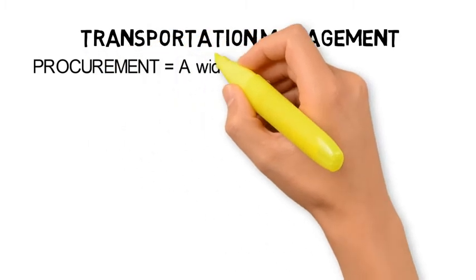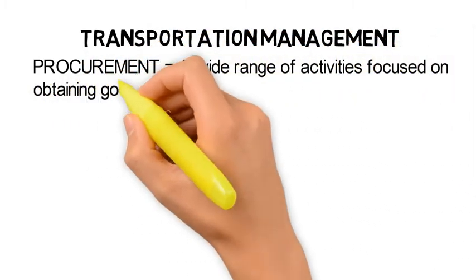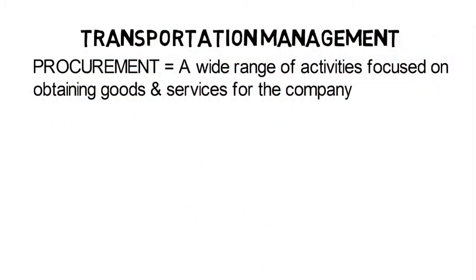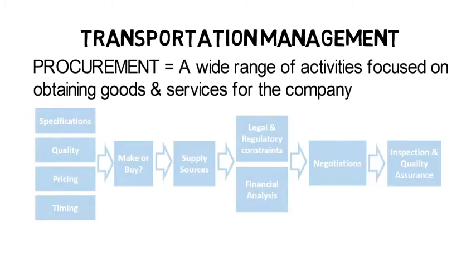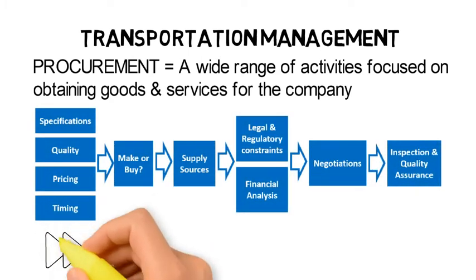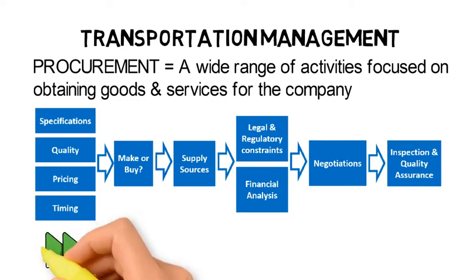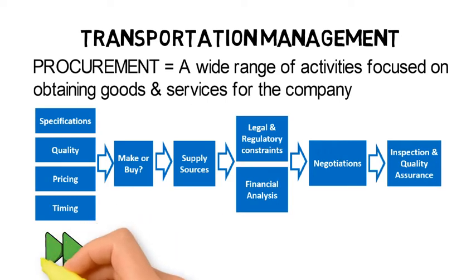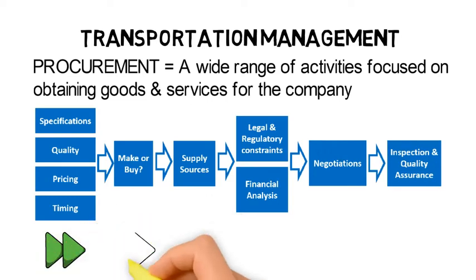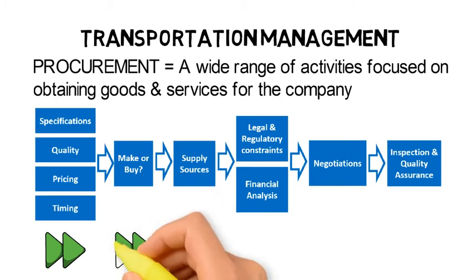First, let's look at what is procurement. Procurement is a wide range of activities focused on obtaining goods and services for the company. It starts with determining the details of what and when the company wants to buy — specifications, quality, pricing, and timing. Then, there is the decision of make or buy: do you make it yourself or buy it from someone else?